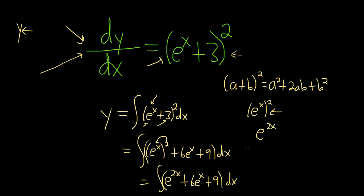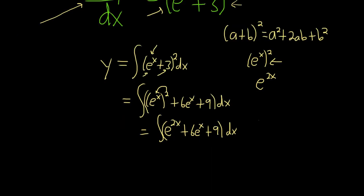Okay. So now we have to integrate each piece. So when you integrate e to the 2x, you just divide by 2, and I'll explain why in a minute. So it's just e to the 2x over 2. Here the integral of e to the x is e to the x, so this is 6 e to the x. And then when you integrate 9, you just get 9x, and that's it, plus c.